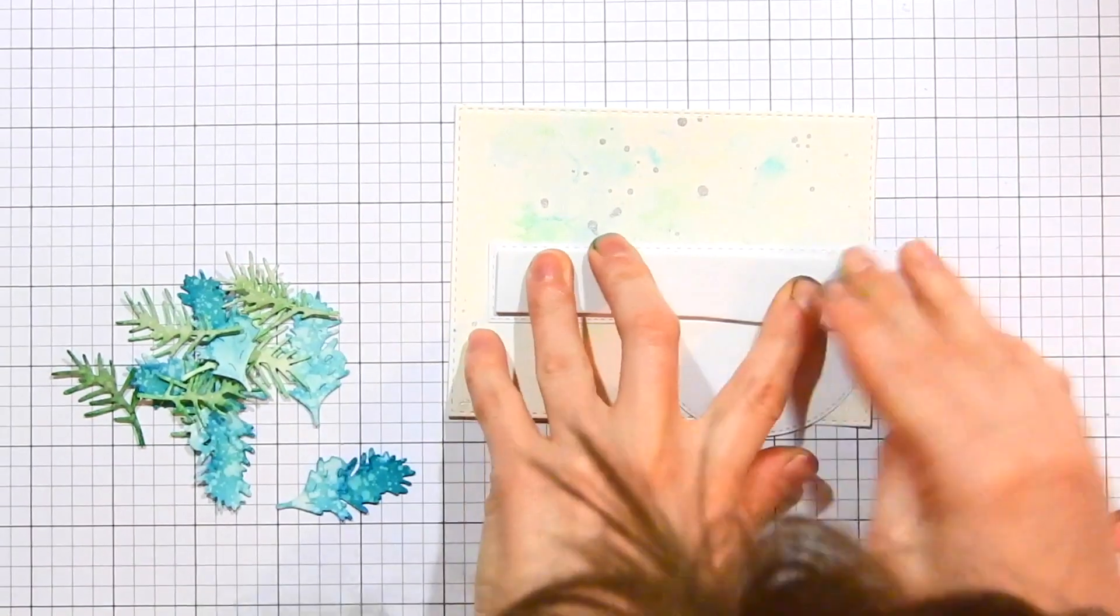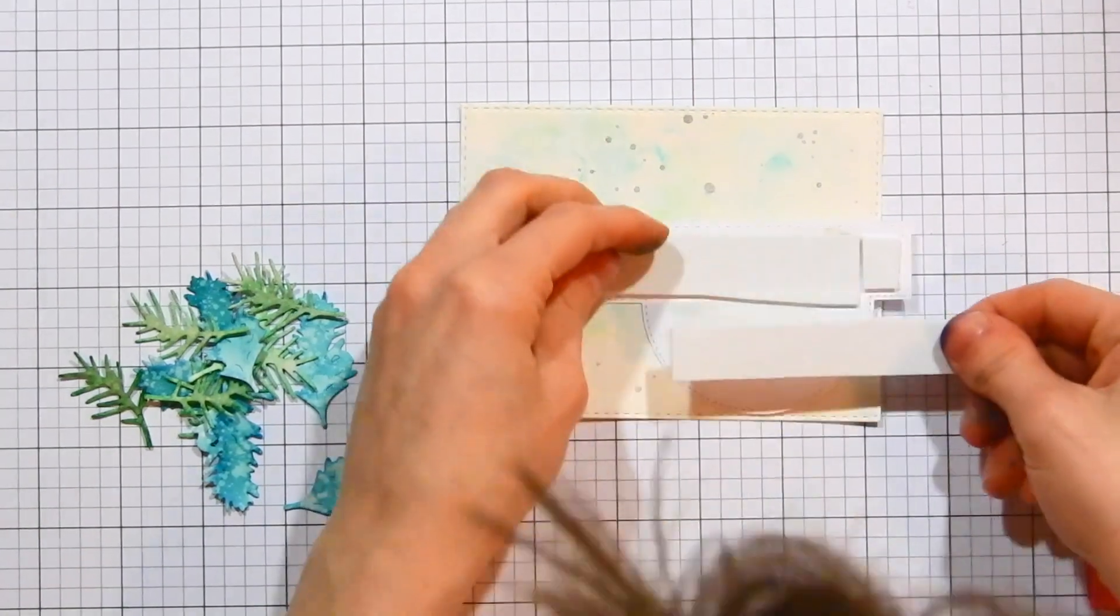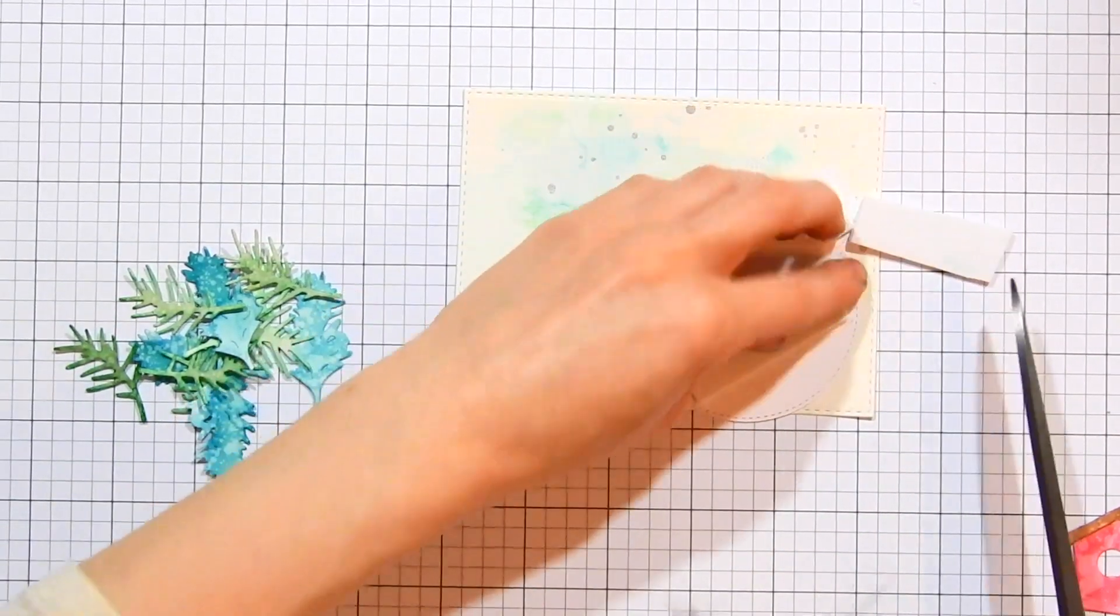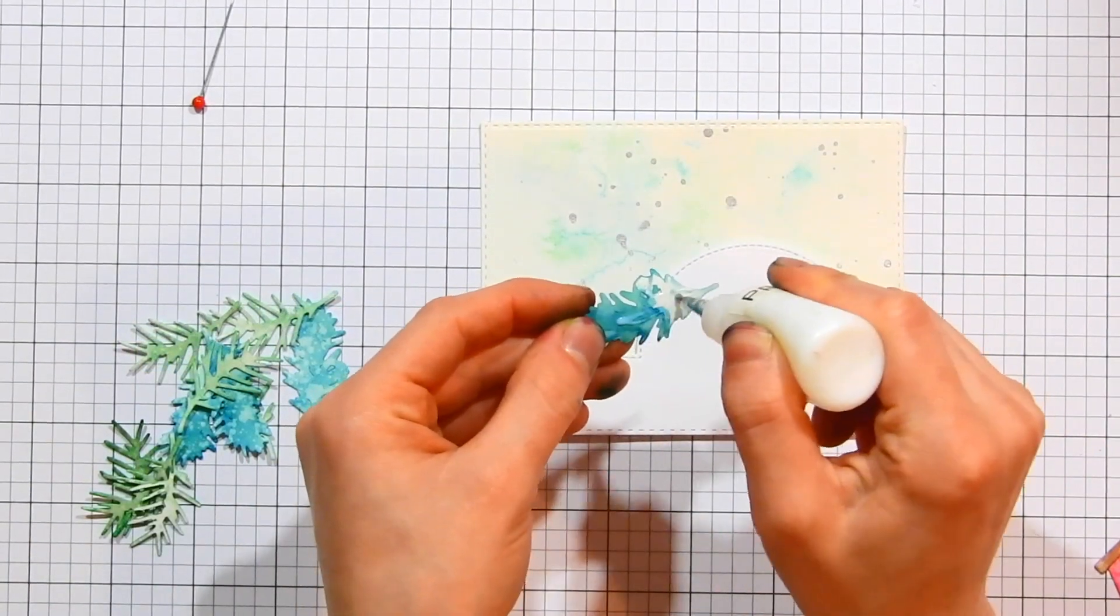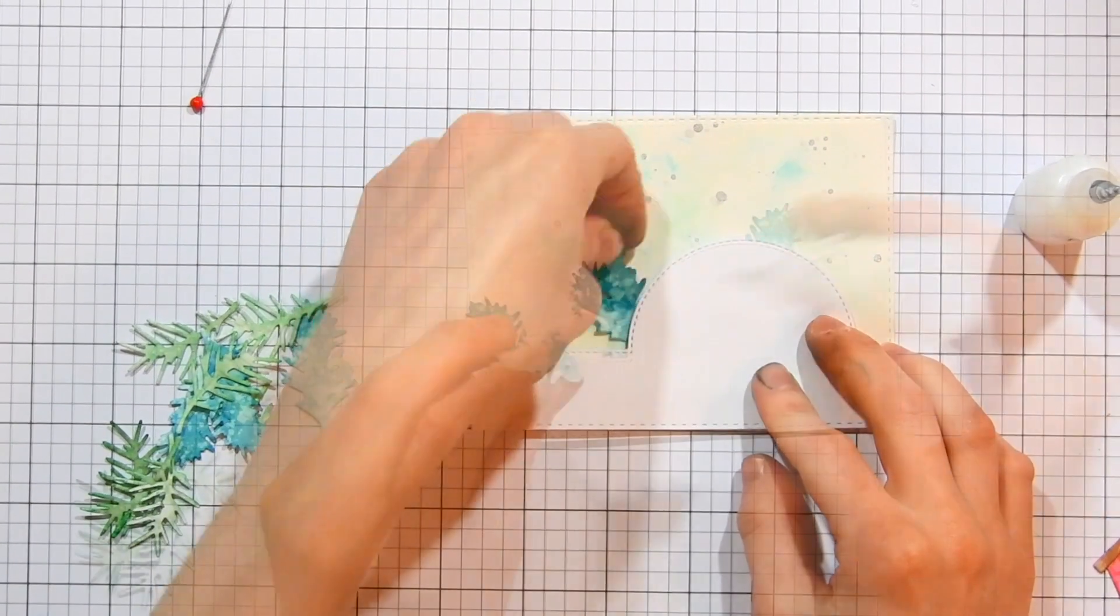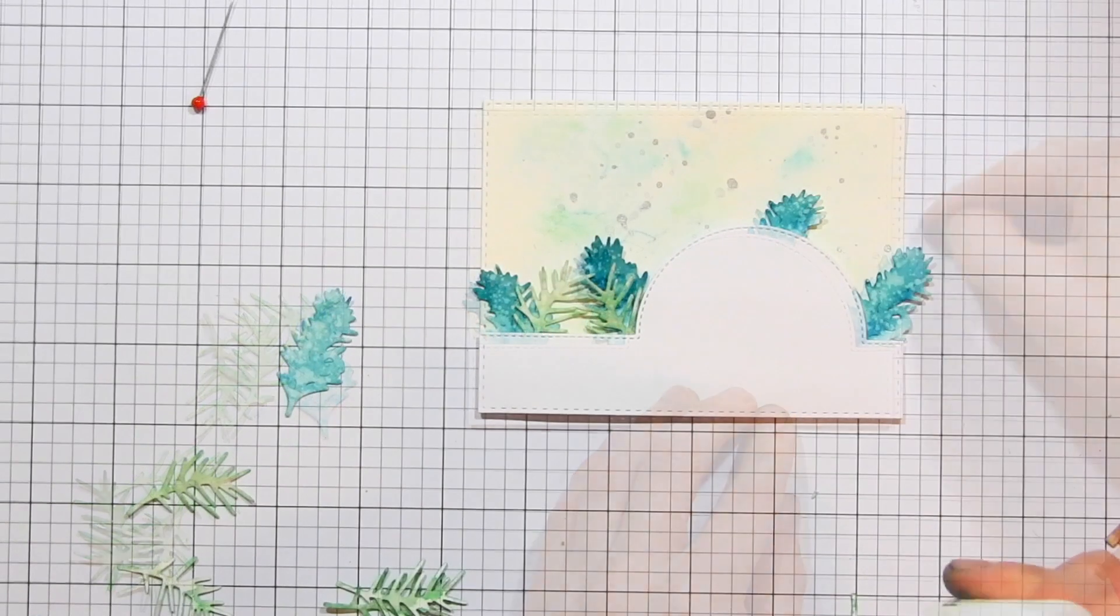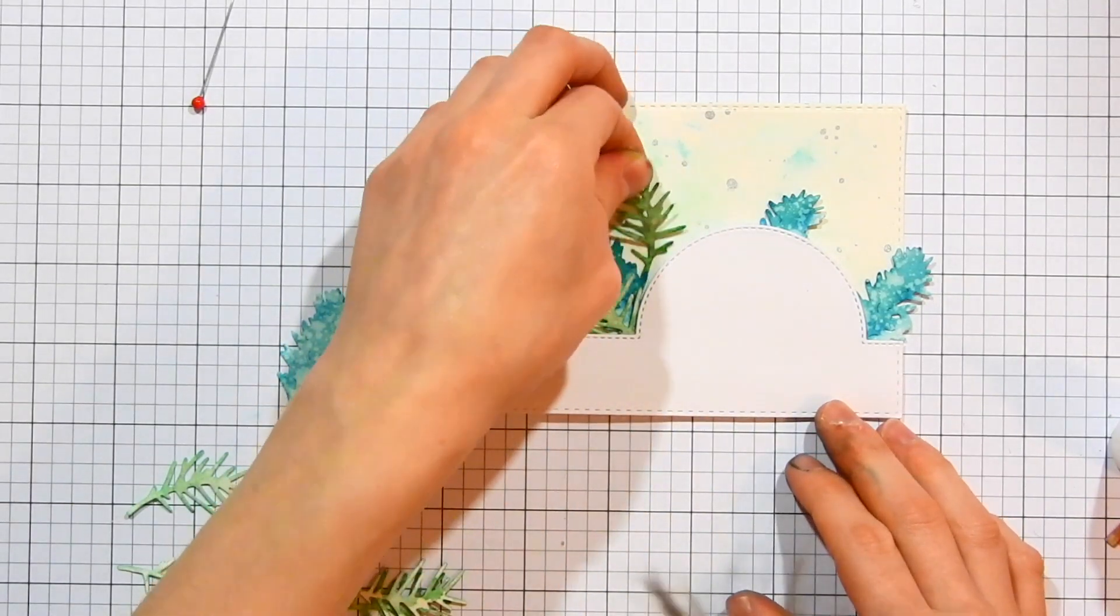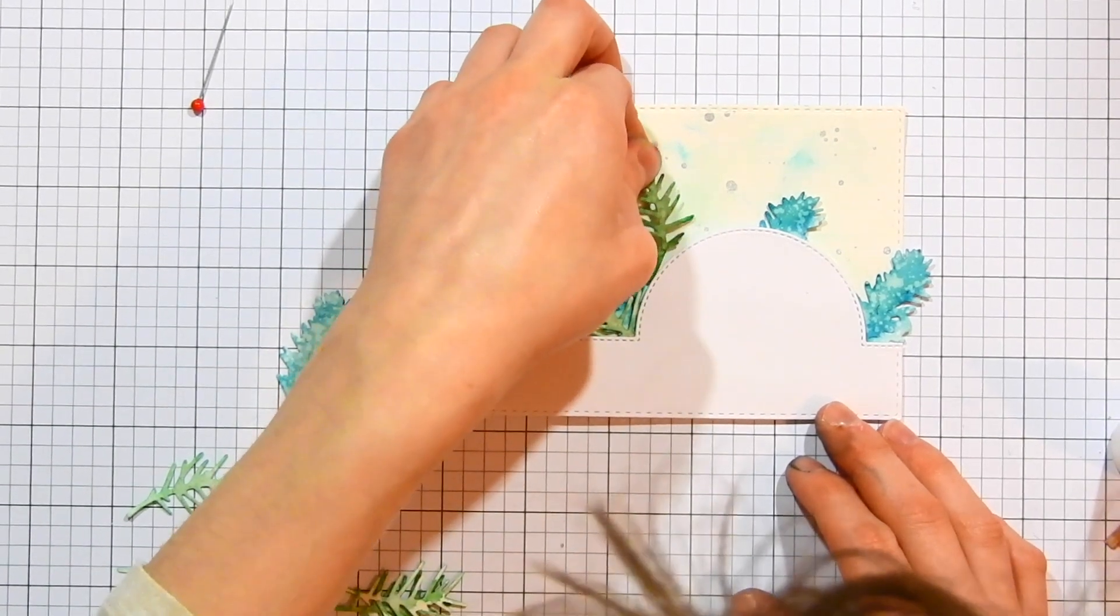I'm taking some fun foam and putting it on the backside of our die cut piece, and I'm going to be able to attach this right on top of our watercolor paper to create this nice raised up border panel. I'm also going to be starting to attach my little pine boughs. I'm using the same liquid glue that I used to build my birdhouses, and I'm just applying it to the backside of each of these little die cut pieces and attaching them down behind my border panel.